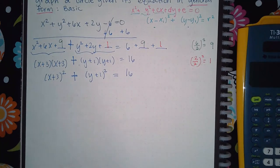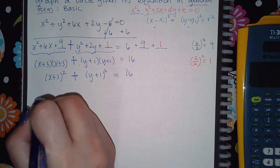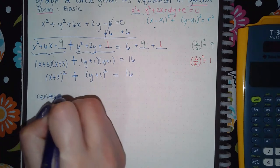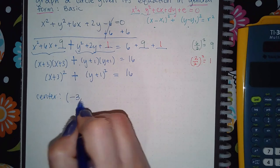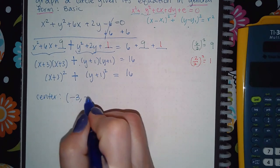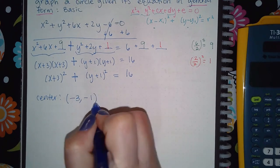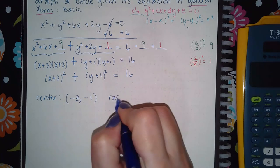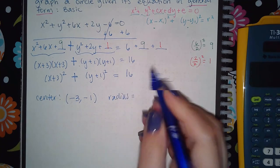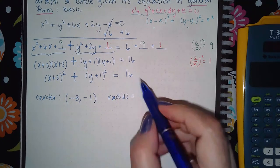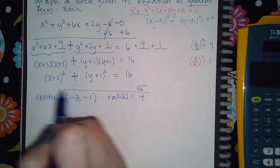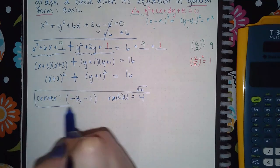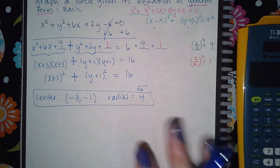Now that it's in standard form, pick out the center. Remember, you take the opposite value: positive 3 becomes negative 3, and positive 1 becomes negative 1, so the center is (−3, −1). For the radius, take the square root of 16, which is 4.